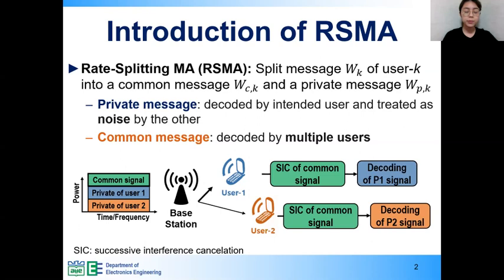The distinct feature of RSMA is the split of messages into common and private parts. The common parts are combined and encoded to one common stream that can be decoded by all users. On the other hand, each of the private messages is encoded in a private stream, which is decoded by only its corresponding user.